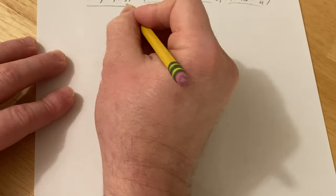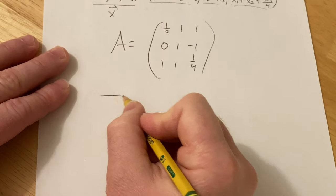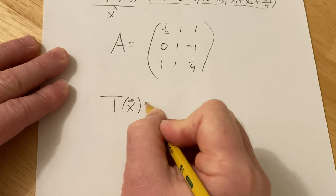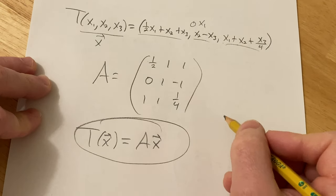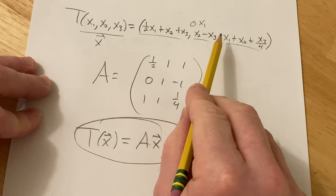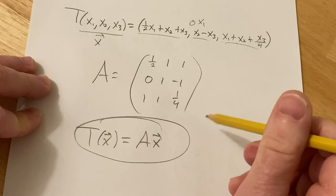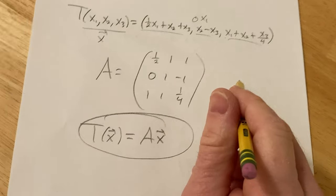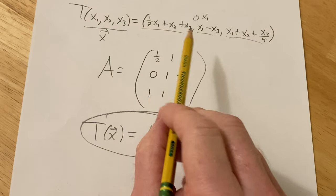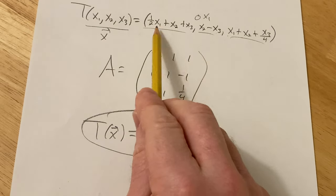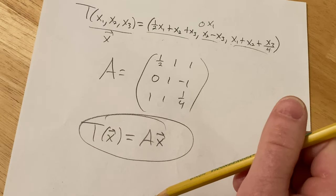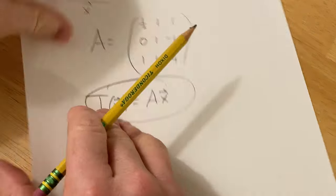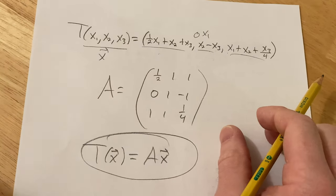And then if you think of this as your vector x, you really have T(x) equals Ax. That's your matrix representation for your linear transformation. Pretty cool that you can do that with linear transformations. That's a key thing. And I think a lot of people have a hard time finding the matrix given the linear transformation. So yeah, hopefully this video has been helpful to someone in the world. Good luck.